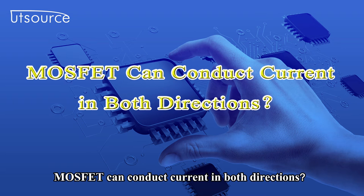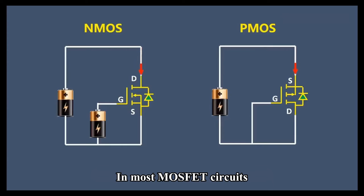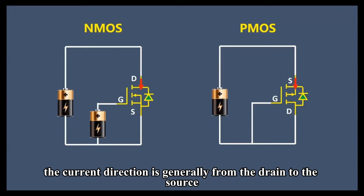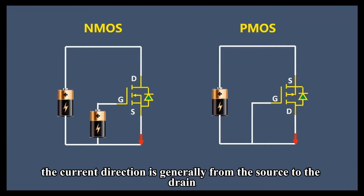MOSFETs can conduct current in both directions. In most MOSFET circuits, for N-MOSFETs the current direction is generally from the drain to the source, and for P-MOSFETs the current direction is generally from the source to the drain.